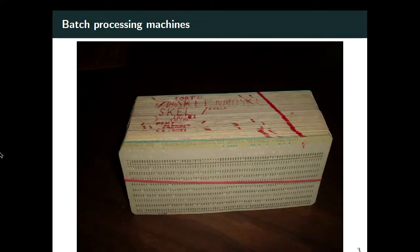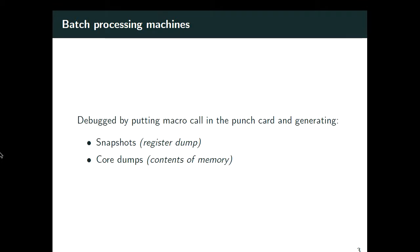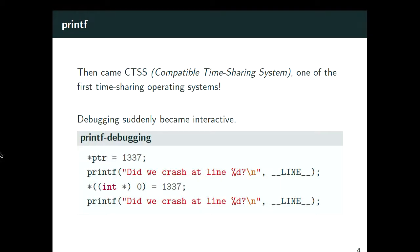At the same time there were batch processing machines: you'd have punch cards tied together and give them to an operator who'd return results later that day or the next day. Since you didn't have direct access to the computer, you debugged by inserting macro calls that gave you register snapshots or a core dump — basically dumping the entire memory to paper — so you could figure out why and how it crashed from the clues left in memory.